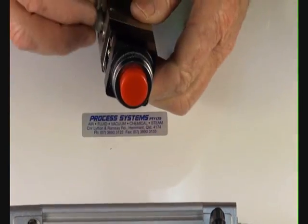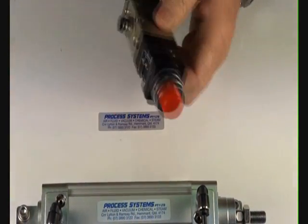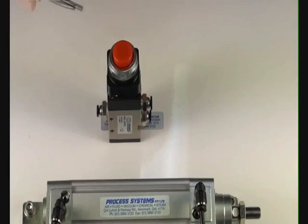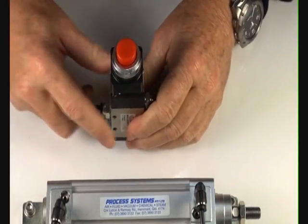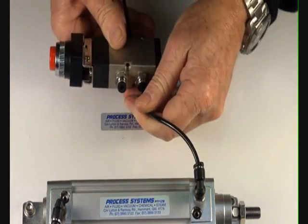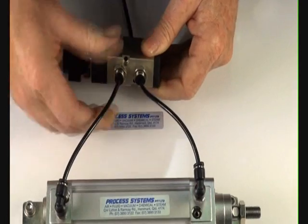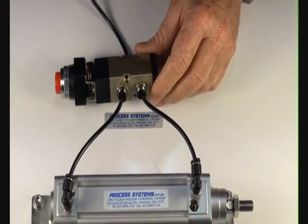Demonstrate this valve in operation. Put the fittings in, supply into the inlet port, two cylinder ports. So the double acting air ram, put the air supply on.